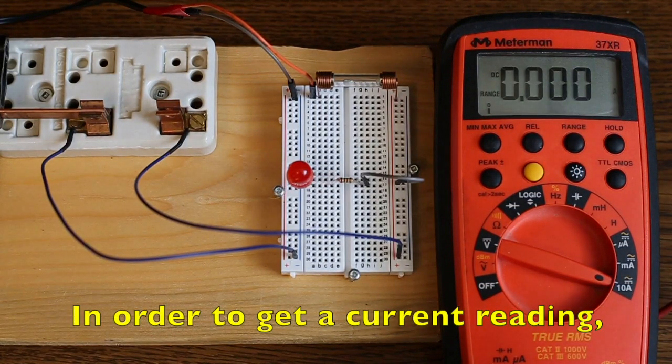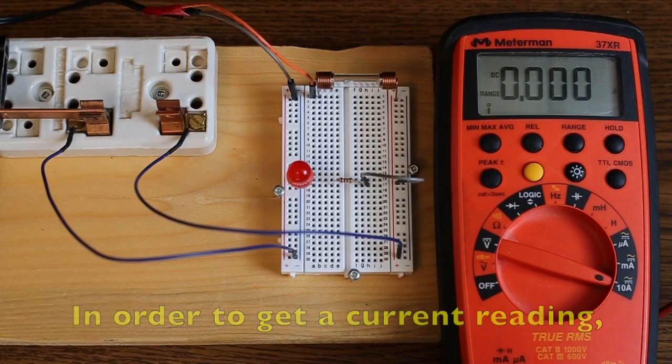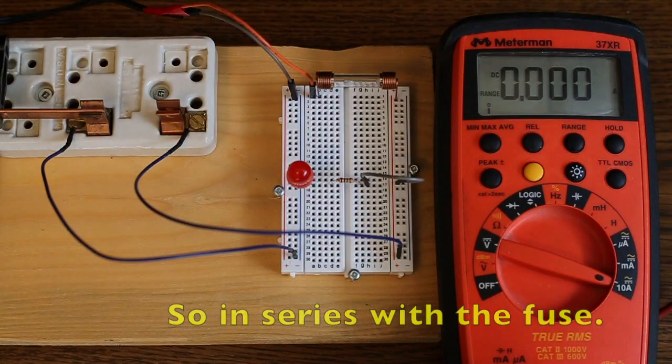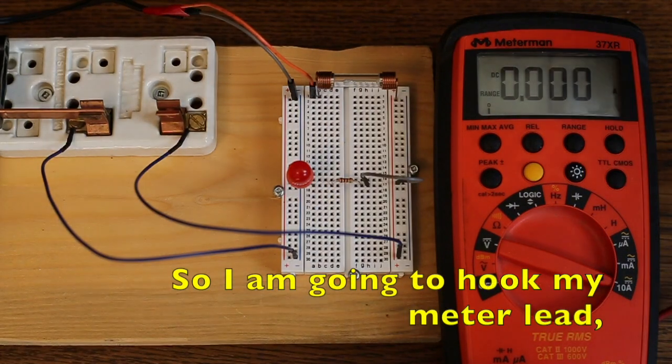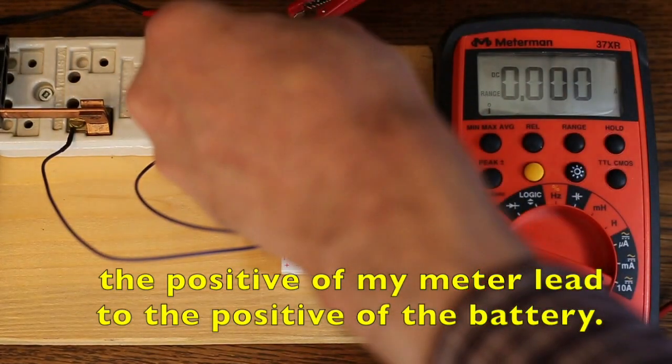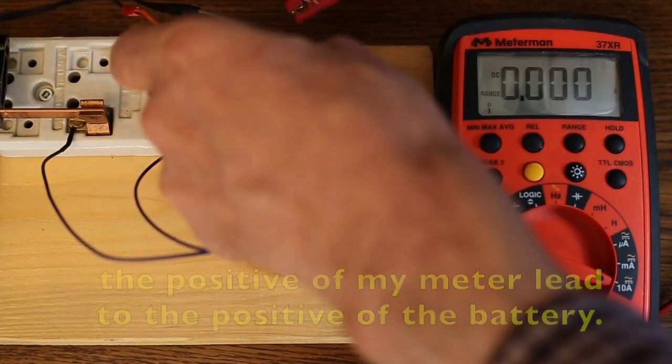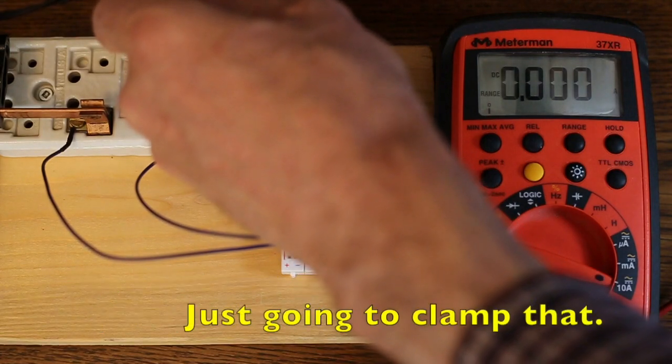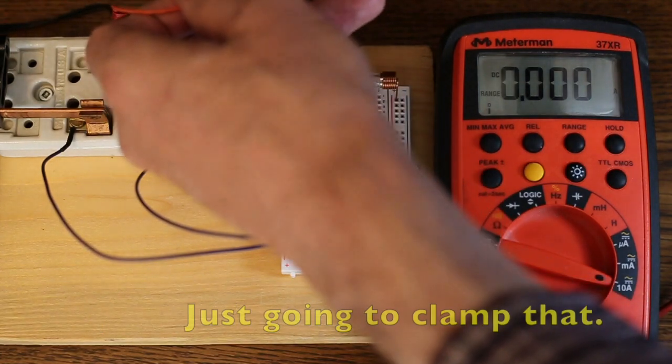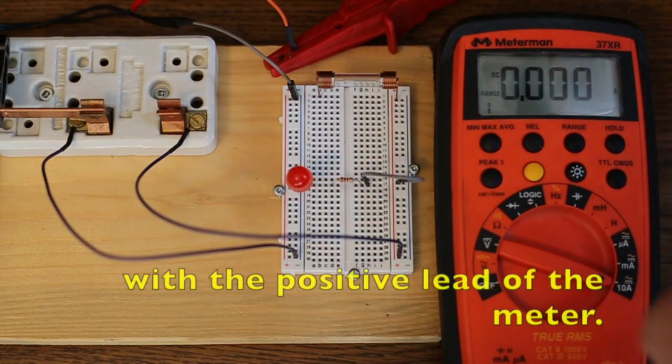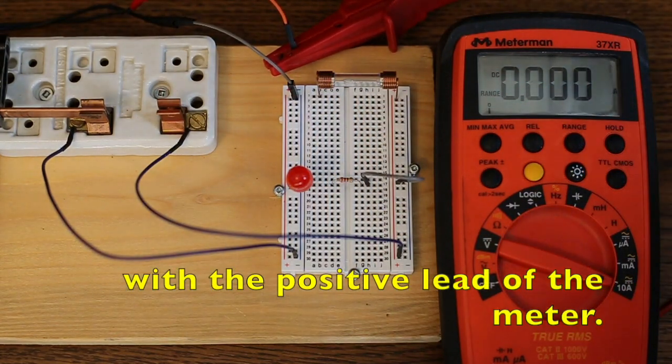And in order to get a current reading, I have to put my meter in series with the circuit, so in series with the fuse. So, I'm going to hook my meter lead, the positive of my meter lead, to the positive of the battery. So, I'm just going to remove it from there. I'm just going to clamp that. There. I've clamped the positive lead with the positive lead of the meter.